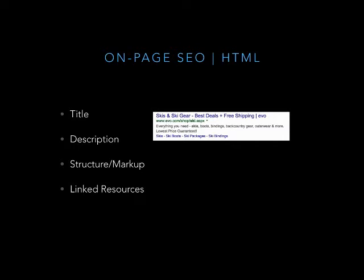Structure and markup refers to the heading tag structure on a page. You typically don't want more than one H1 — that's the main topic for a particular web page. Then you use additional heading tags, H2s and H3s, to break down that content. For example, if your H1 is 'snowboard,' your H2s might be 'top-rated snowboards' or 'newest snowboard companies,' using those heading tags to break up content as you go down the page.